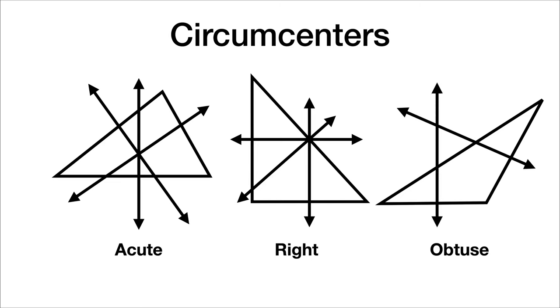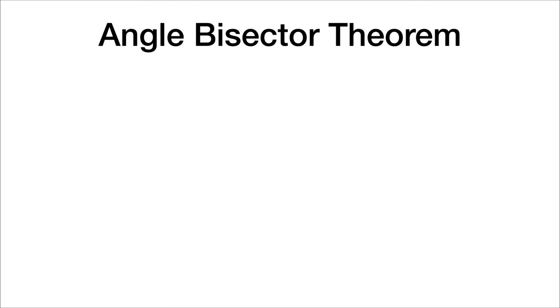If we have an obtuse triangle, the circumcenter will be outside of the figure, like this right here. Now let's talk about angle bisectors.